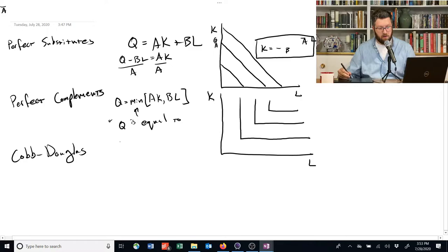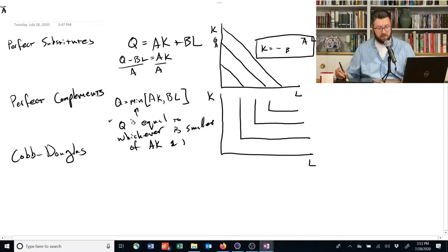What does that mean? That min function means literally Q is equal to whichever is smaller of a, k, and b, l. So if k, suppose a is equal to 1 and b is equal to 1, so then it's just equal to, then this example is just something like Q equals min of k and l.